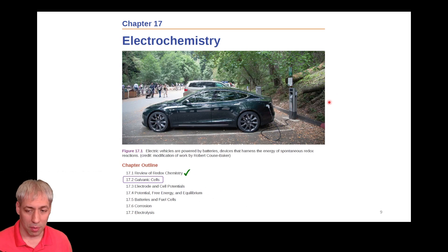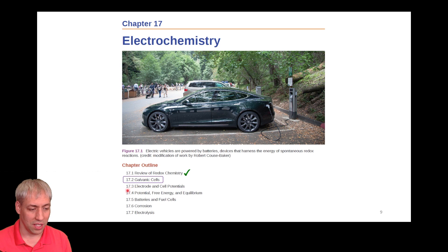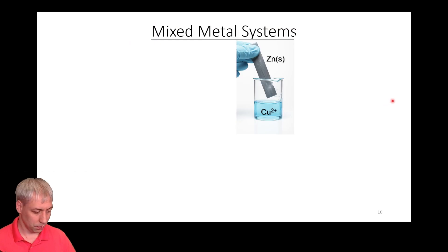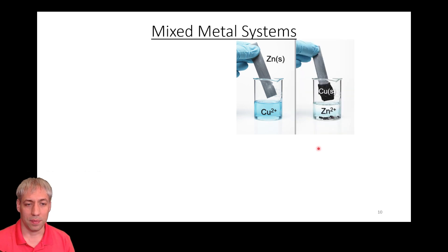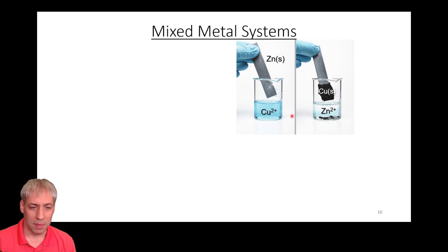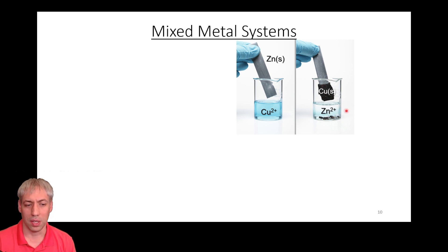Now we can dive into useful applications of this foundation in redox chemistry and half reactions. We'll cover through sections 17.3 and 17.4, including batteries, fuel cells, corrosion, electrolysis, and rust — all relying on these half reactions. We start with galvanic cells. If you take zinc metal and put it in a copper two-plus solution — that blue coloration — you'll see the zinc solid start to dissolve and copper solid start to be deposited. The blue color disappears as Cu²⁺ becomes Cu solid and zinc dissolves to Zn²⁺.